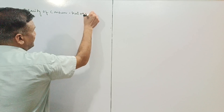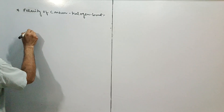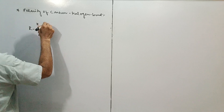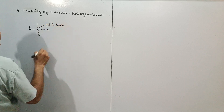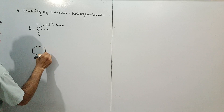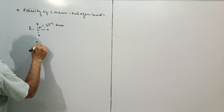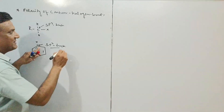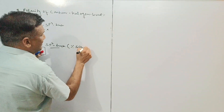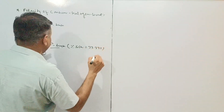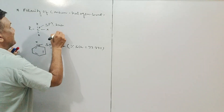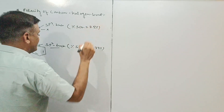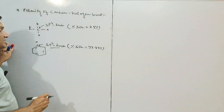Carbon-halogen bond ki baat karein to haloalkane mein carbon par sp3 hybridization hogi, jabki haloarene mein is position par hybridization sp2 hogi. Is carbon ki sp2 position par percentage of s-character zyada hone se electronegativity zyada hogi, jabki sp3 mein percentage of s-character kam hone ke karan electronegativity kam hogi, to us position mein bond length zyada hogi.